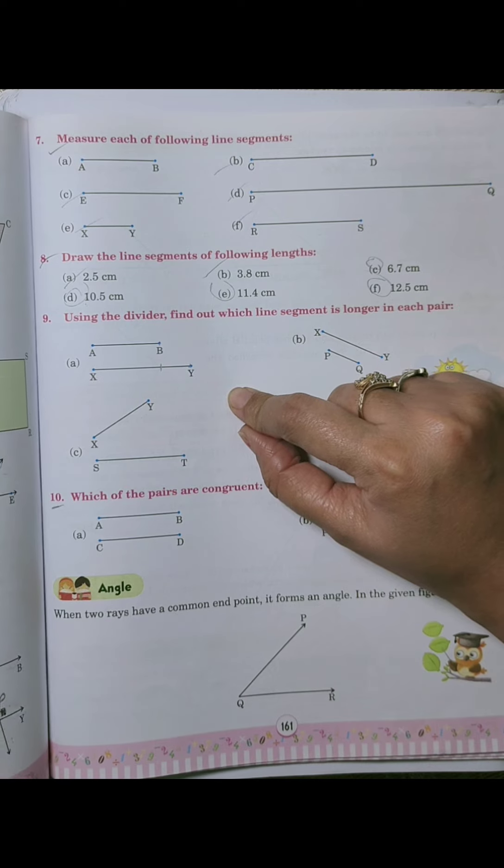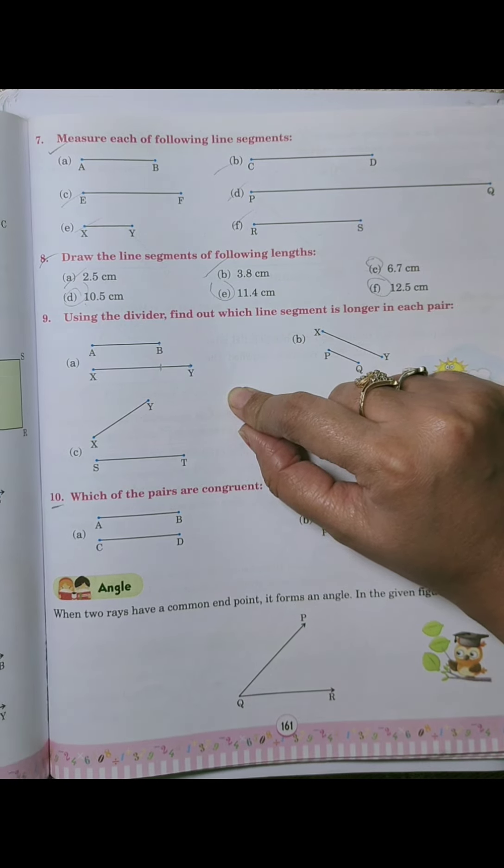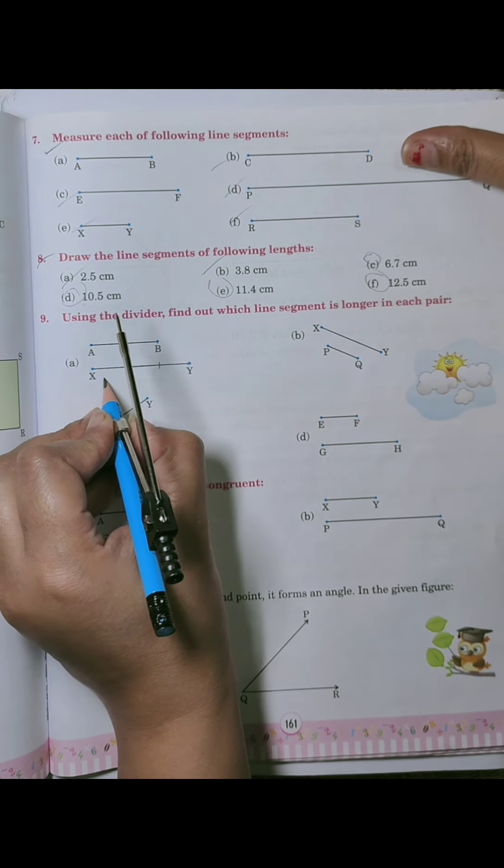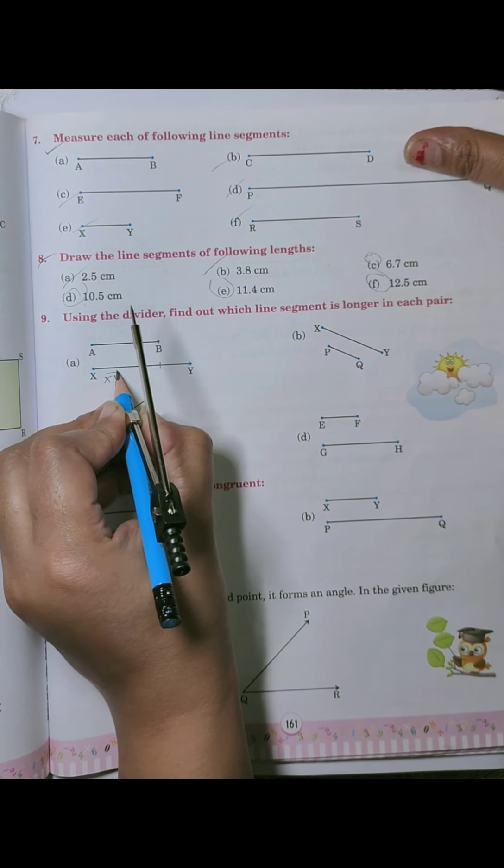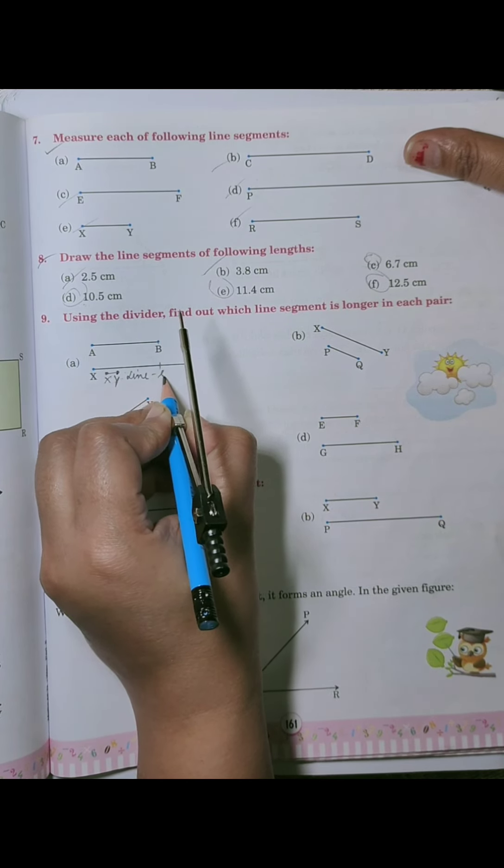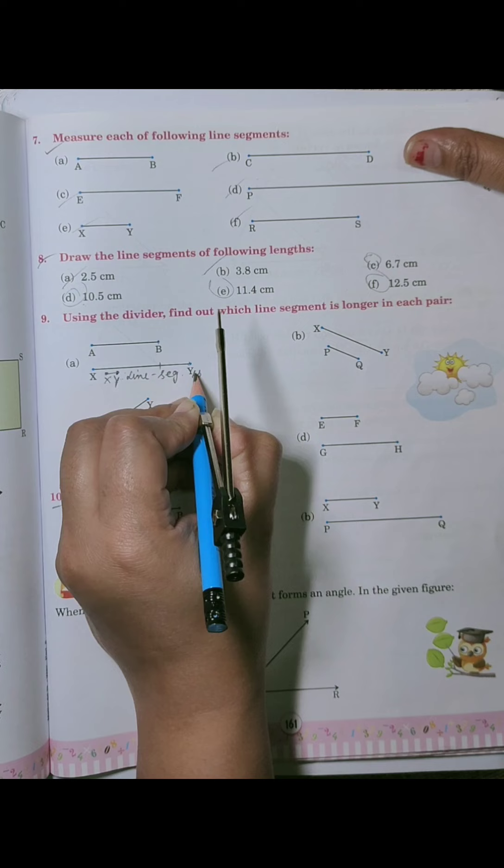So XY line segment is longer. So this is longer, right? So we will do this question in the book. XY line segment is longer.